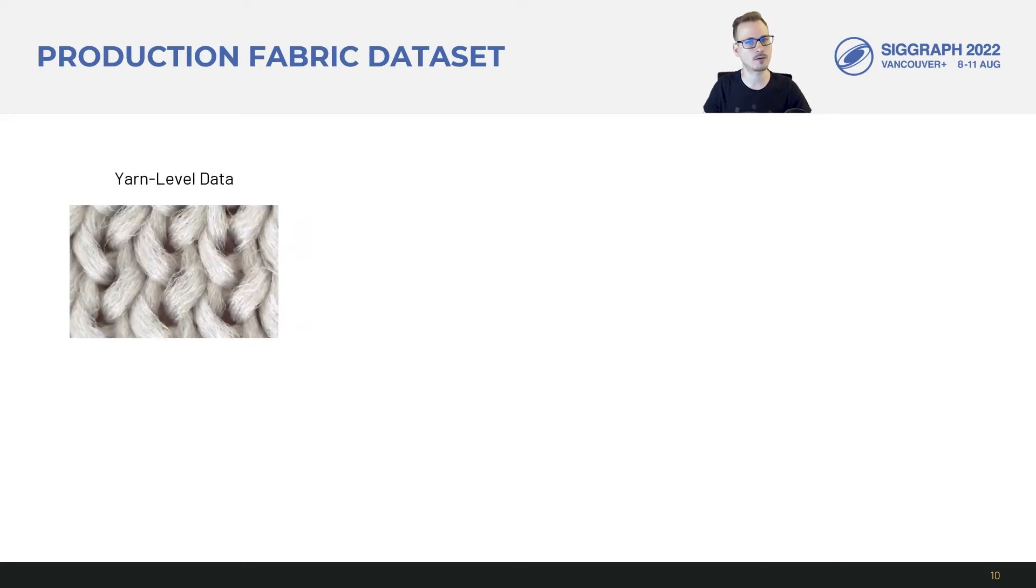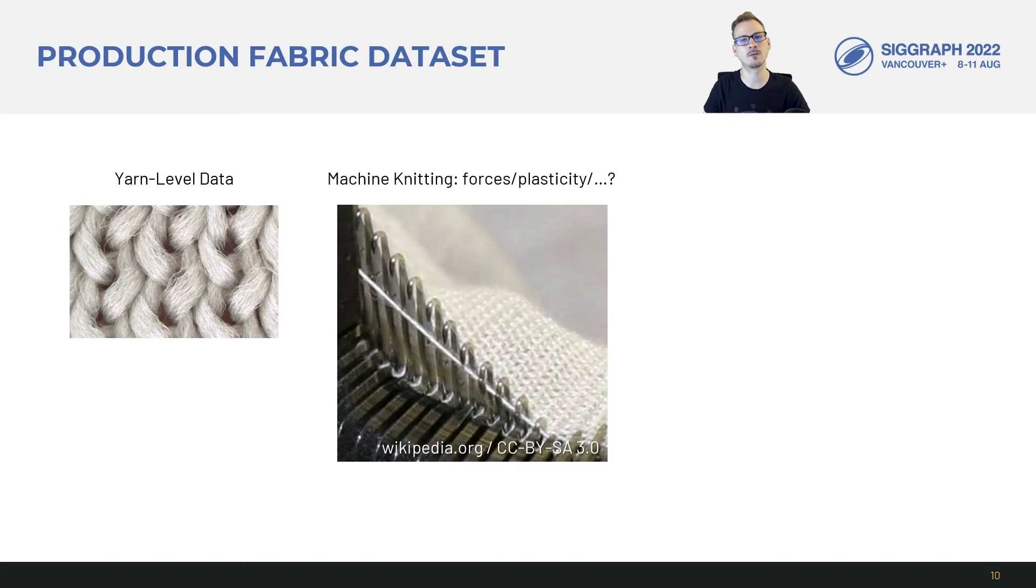There are some key challenges in designing a data set for a problem of matching production fabrics via yarn simulation. While we could start with yarn-level data and then attempt to forward simulate the machine knitting process, there are too many unknowns such as the forces applied by the needles, how the yarns deform plastically, and more.